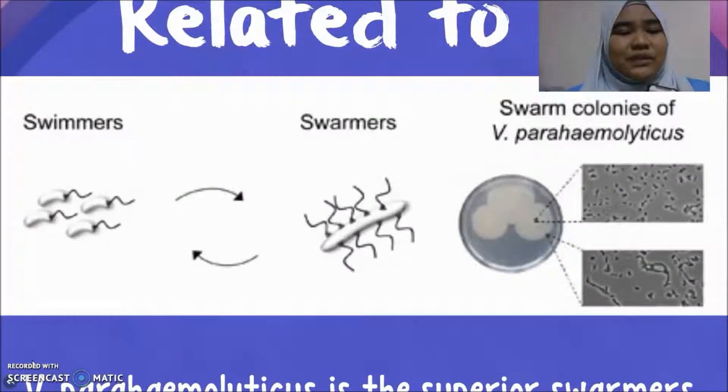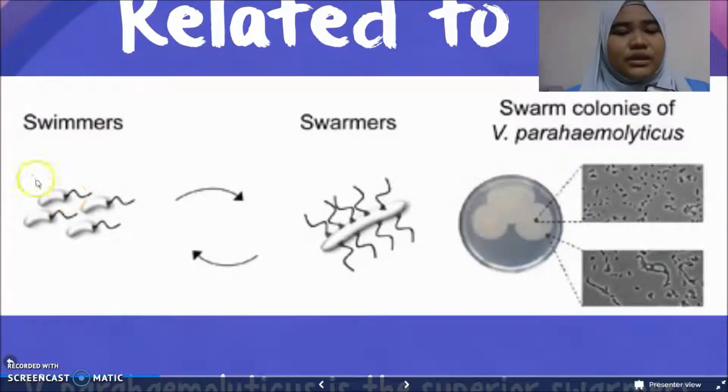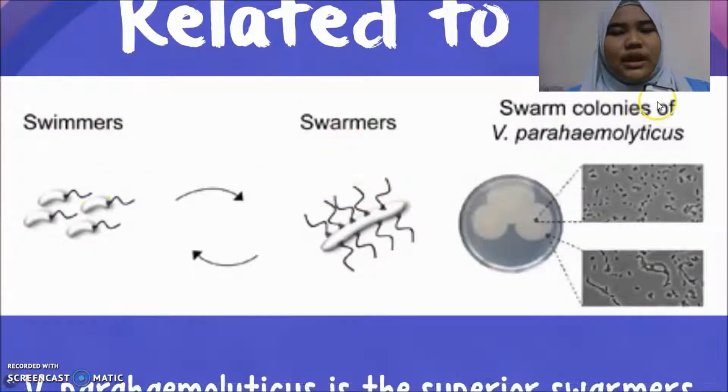As you can see here, the swimmer and the swarmers. And here are the swarm colonies of Vibrio parahaemolyticus.